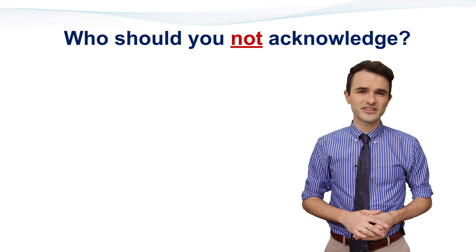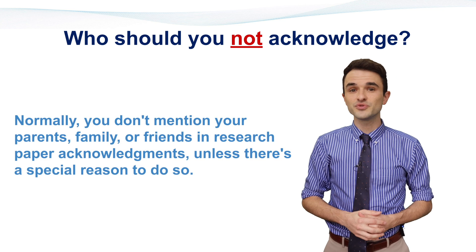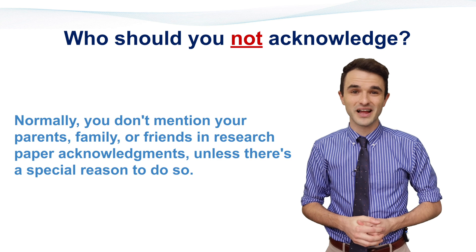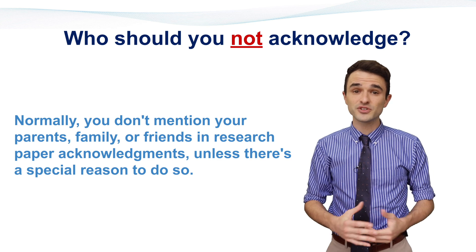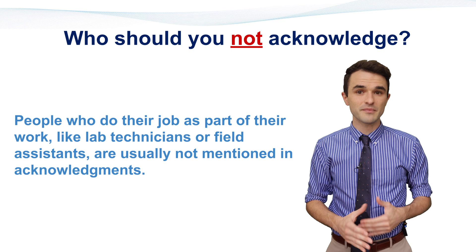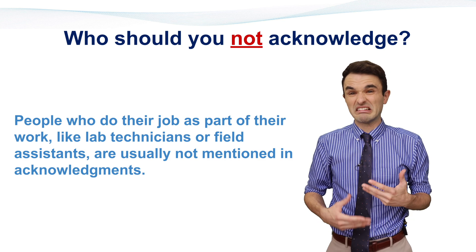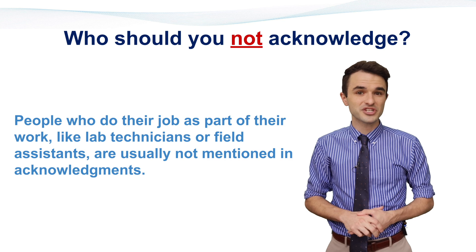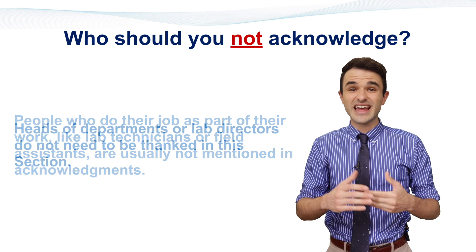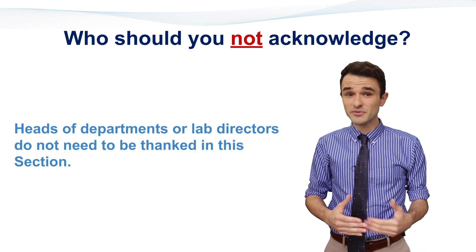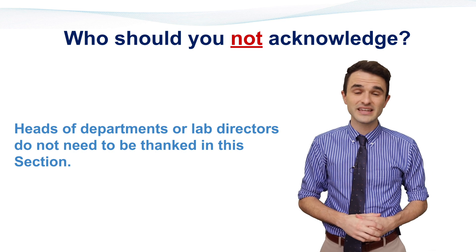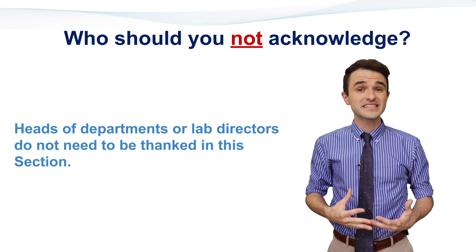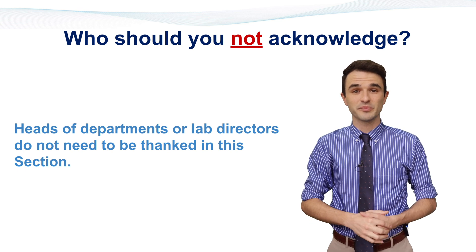Who should you not acknowledge? Normally, you don't mention your parents, family, or friends in research paper acknowledgements, unless there's a special reason to do so. People who do their job as part of their work, like lab technicians or field assistants, are usually not mentioned. Heads of departments or lab directors do not need to be thanked in this section. You may mention any of these people if they did something extra special to help you.